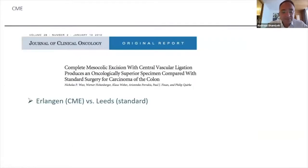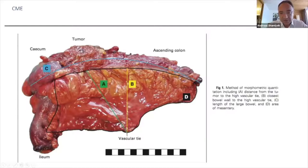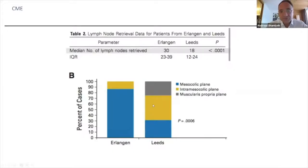Hohenberger and his team did a comparison with the clinic of Leeds, comparing the new CME technique with the standard technique, published about eight years ago. They did a prospective study of 49 patients with photo documentation over two years, and compared with Leeds where there were 25 prospective and 15 retrospective patients. They made complete measurements of the length of the meso and vascular route, and calculated quality of specimen. The lymph node count in the Erlangen group was significantly higher than in the Leeds group.